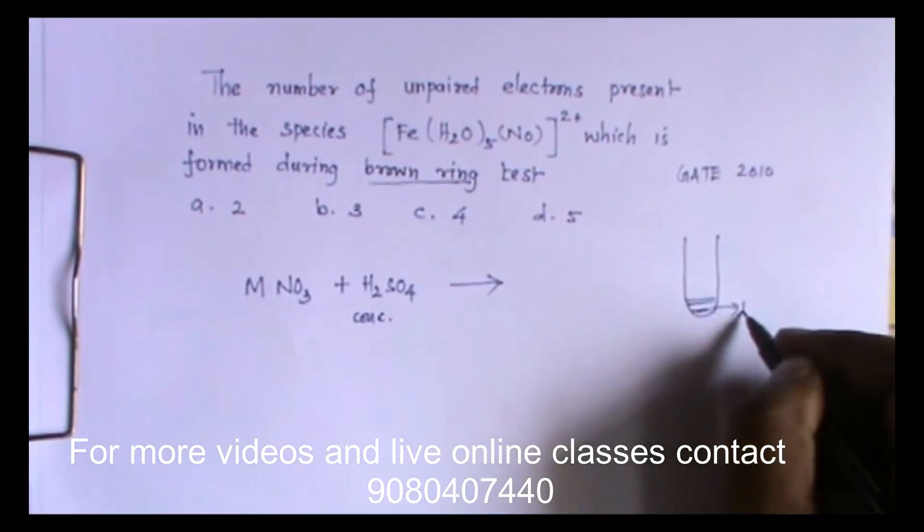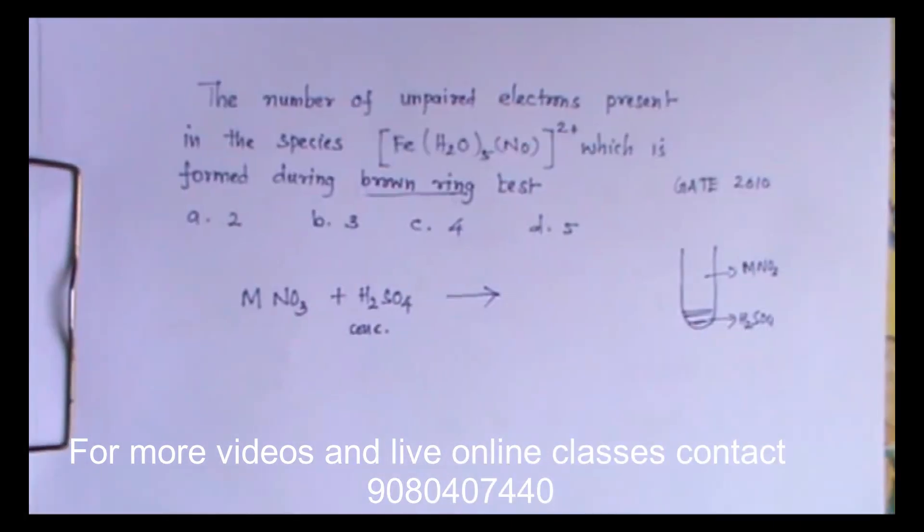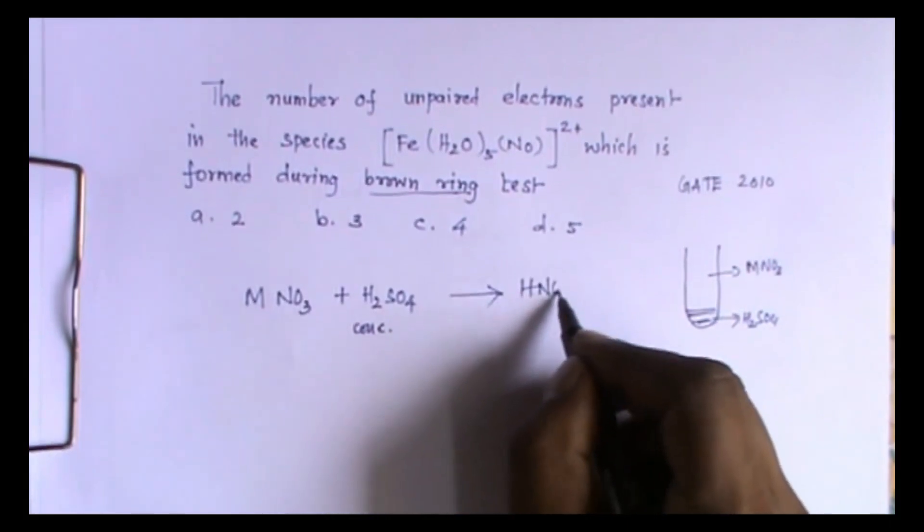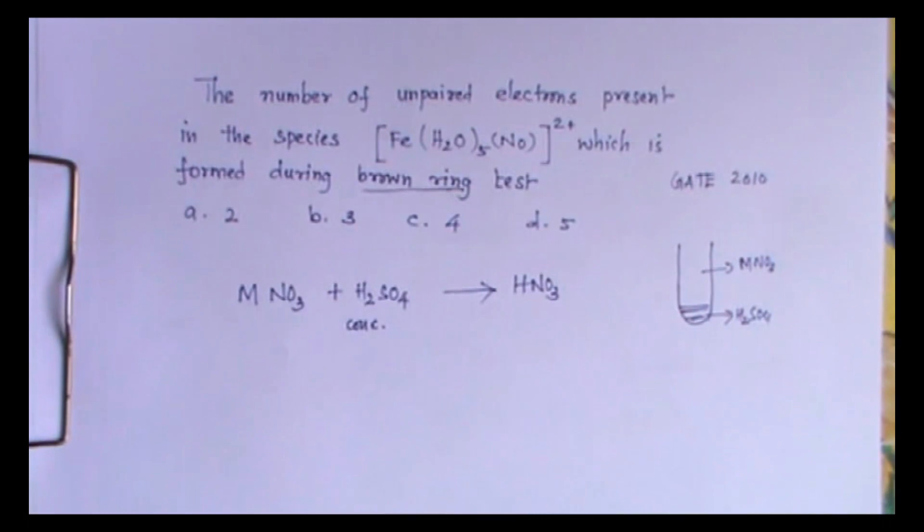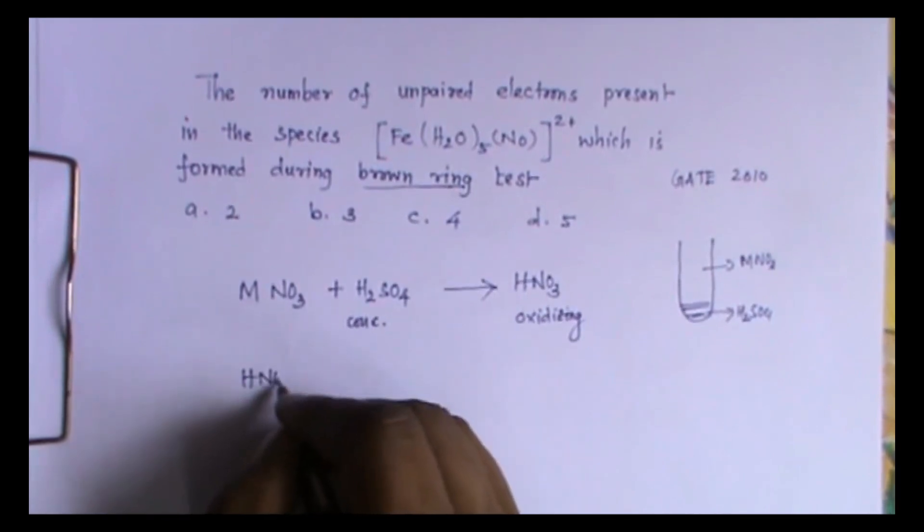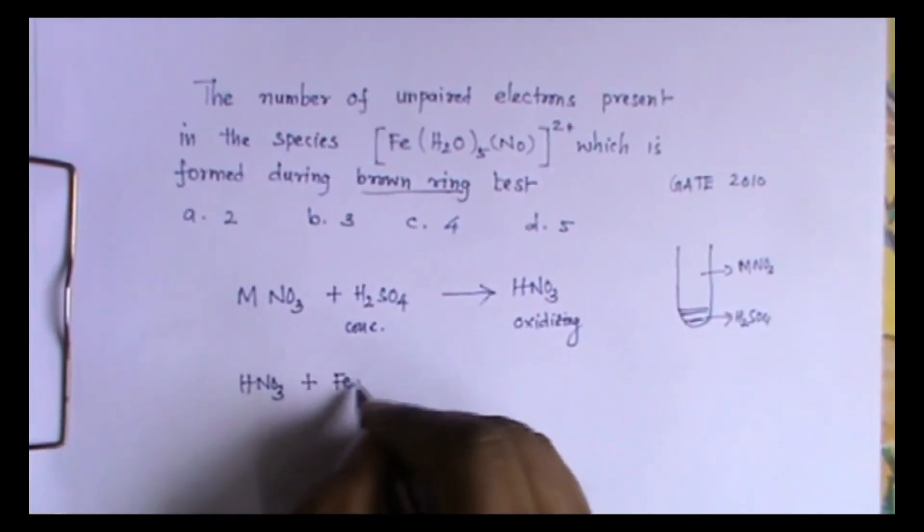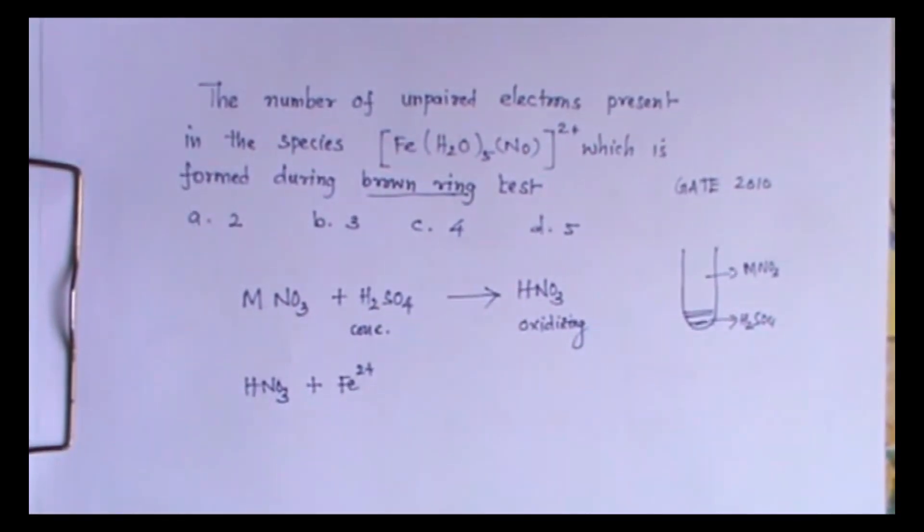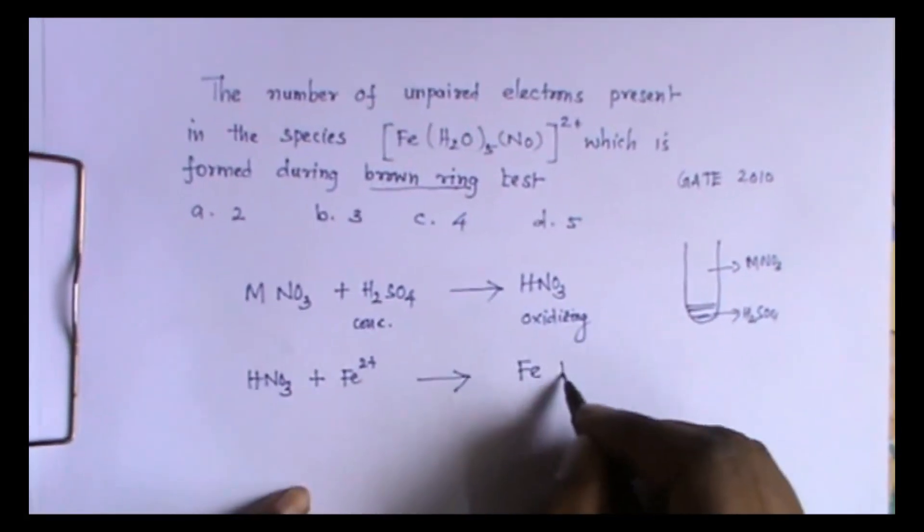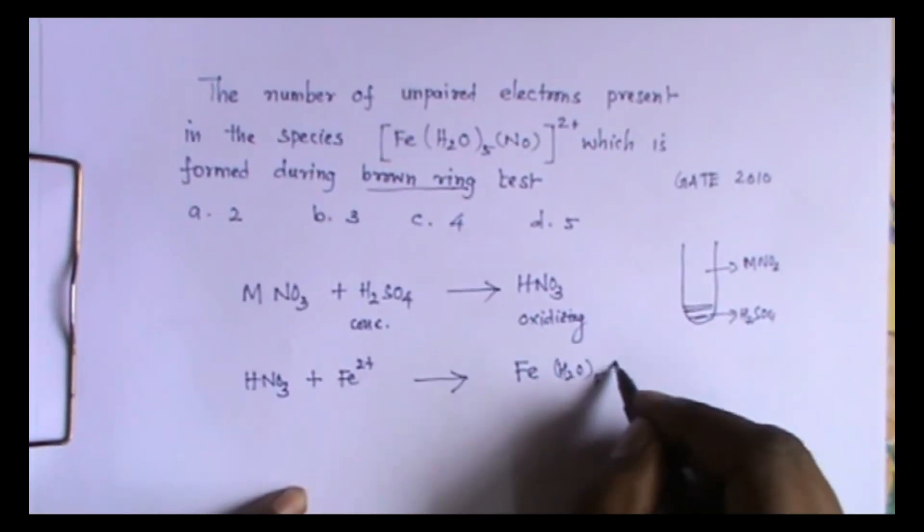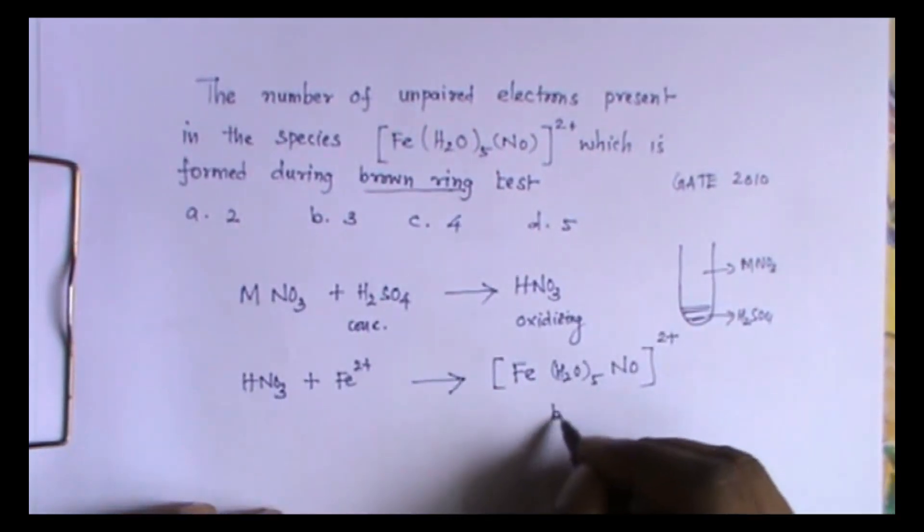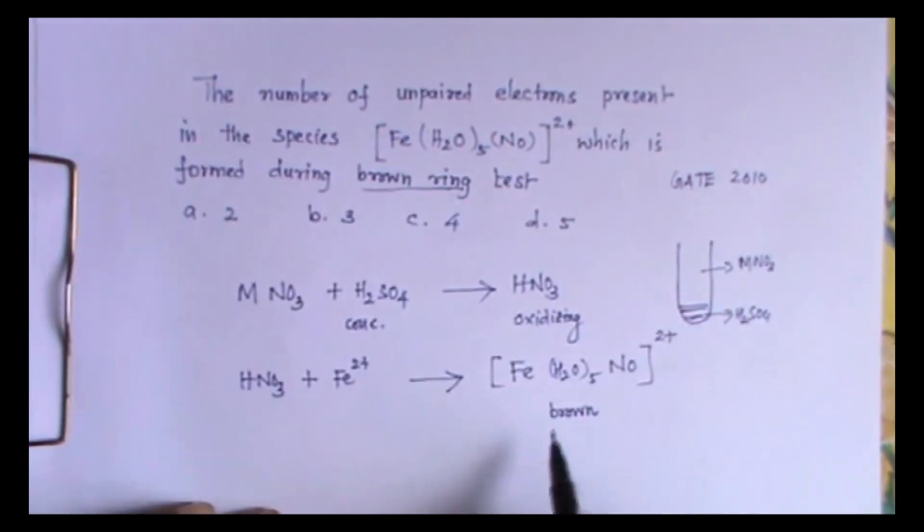At the junction, MNO3 will react with H2SO4. What you get is HNO3. Nitric acid will be formed. Nitric acid is a very good oxidizing agent. This HNO3 reacts with Fe2+. To this we add freshly prepared ferrous sulfate solution. During that time these two will react to give Fe(H2O)5NO, a nitrosyl complex which will be formed. This is brown in color and will be formed at the junction as a ring. So that is the brown ring test.